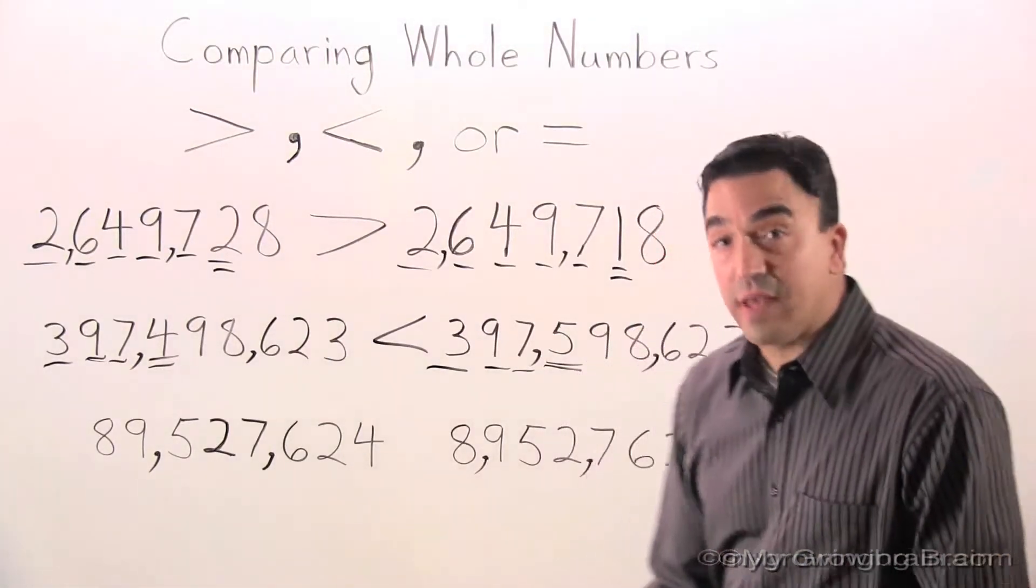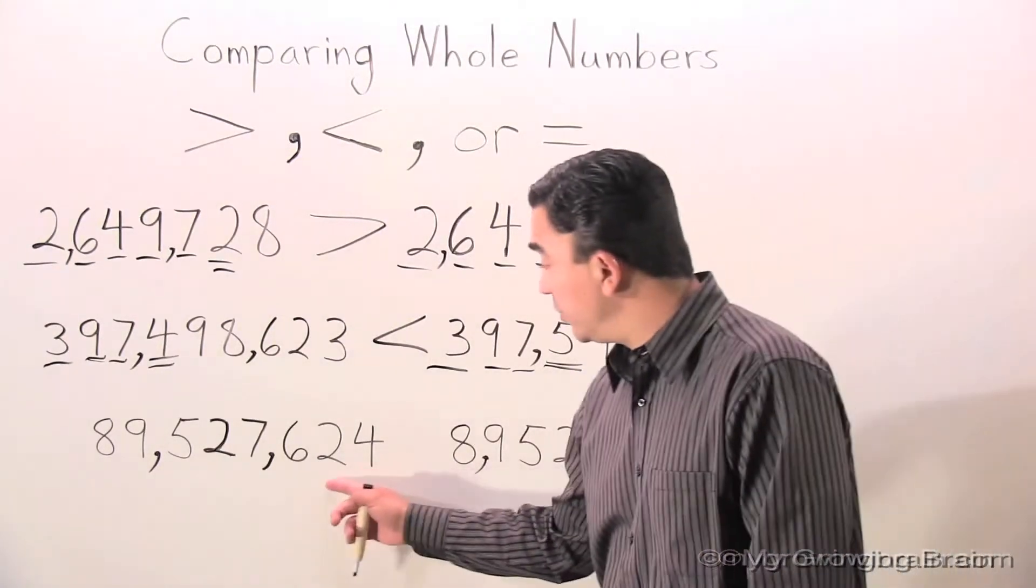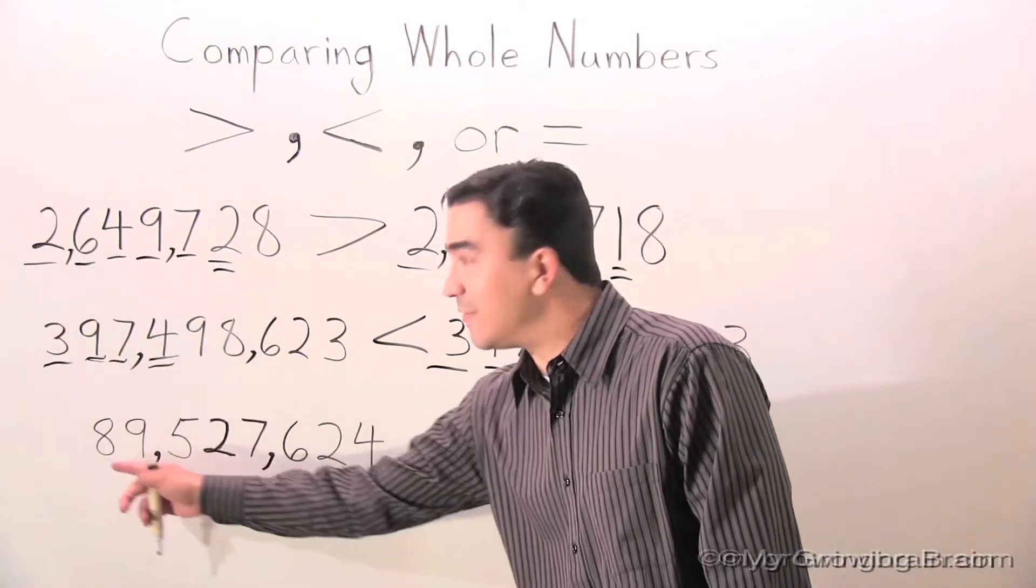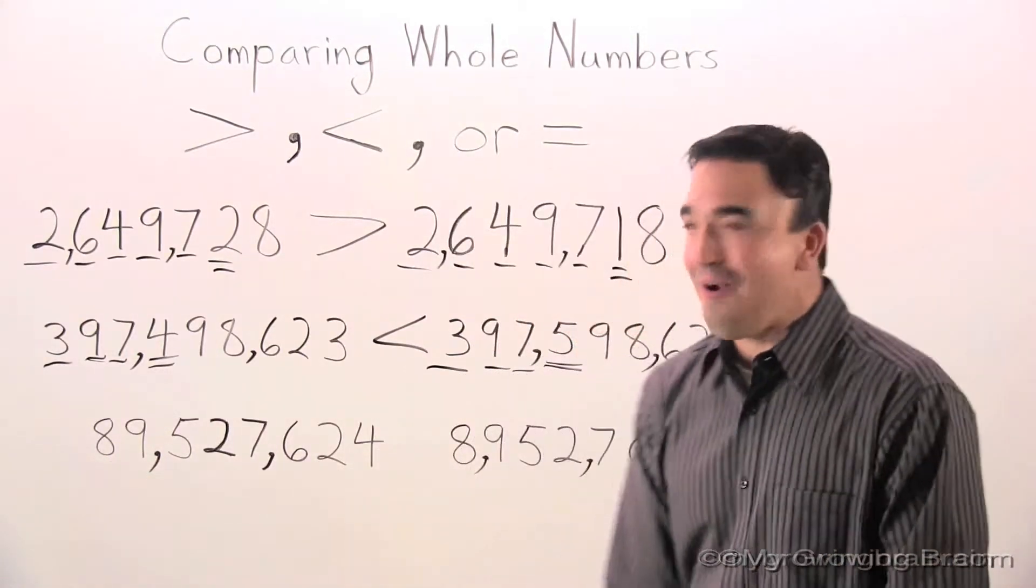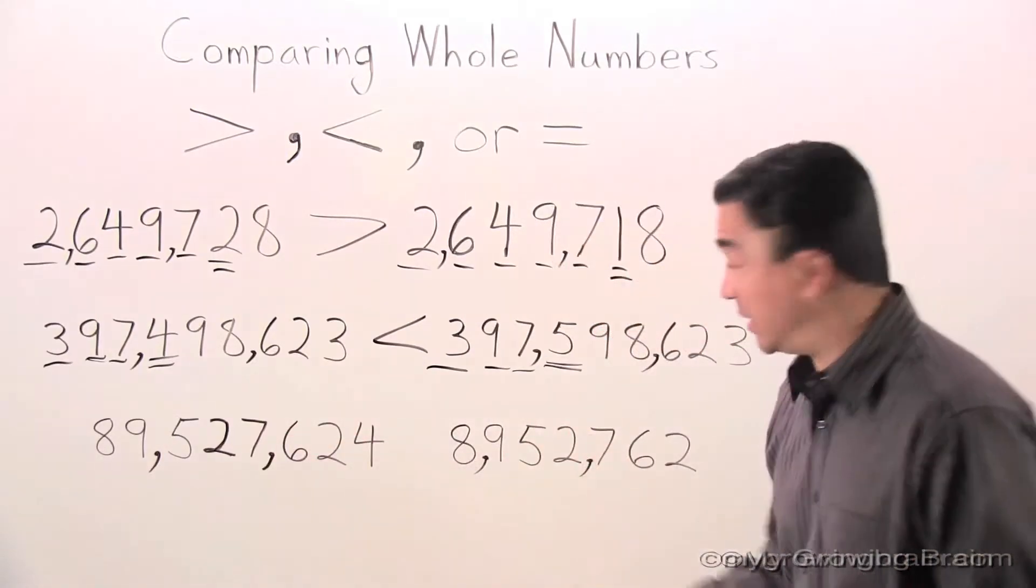First thing we're going to do is count the digits. 1, 2, 3, 4, 5, 6, 7. 1, 2, 3, 4, 5, 6, 7, 8. Eight is greater than seven. Eight digits is greater than seven digits.